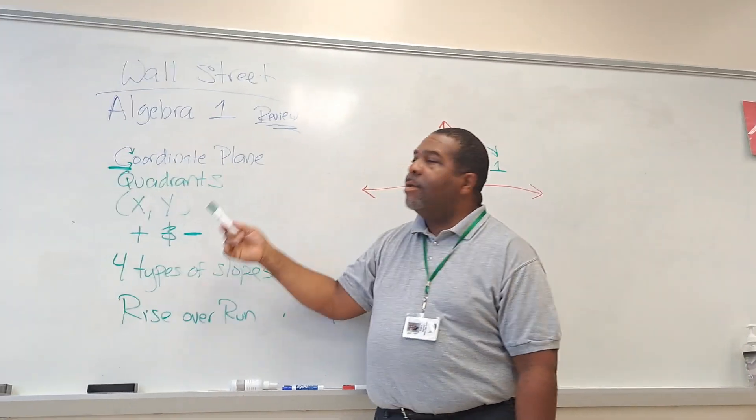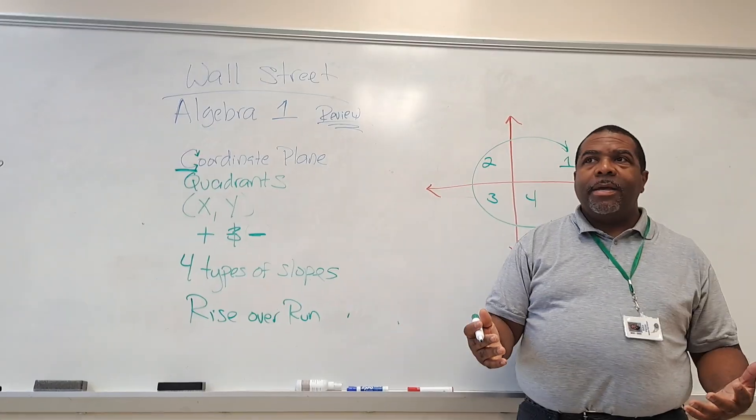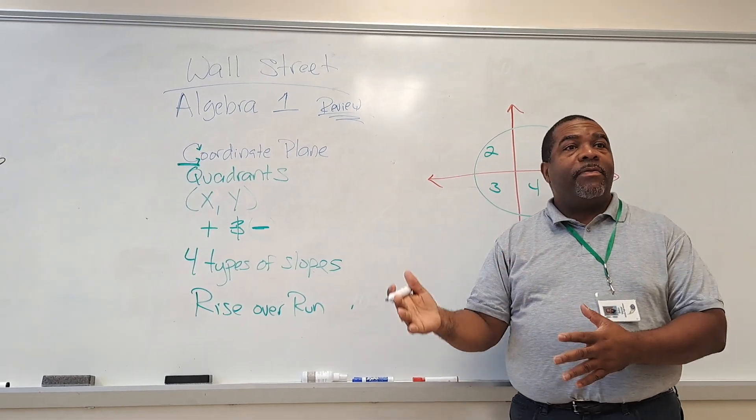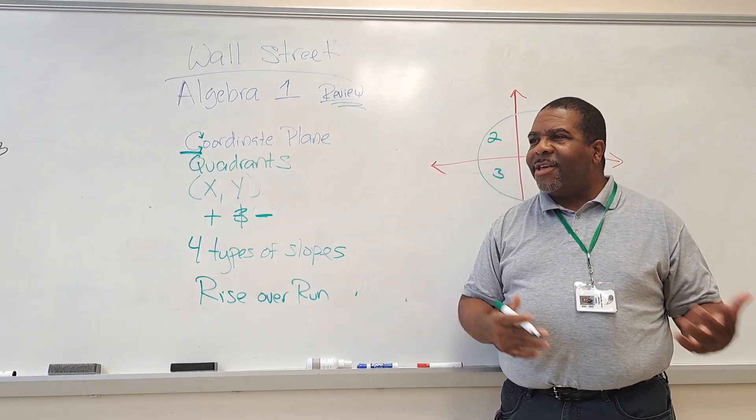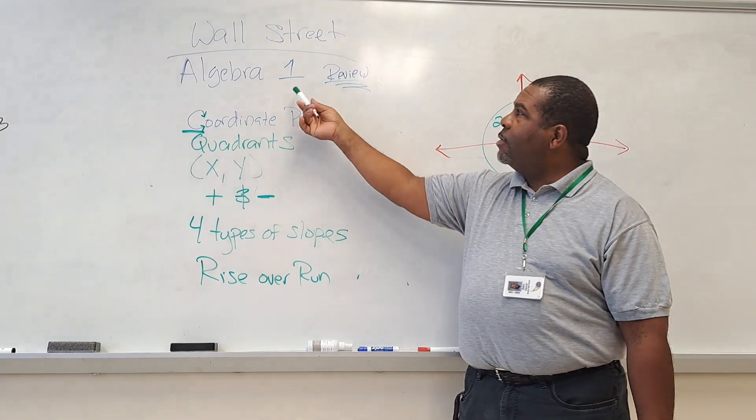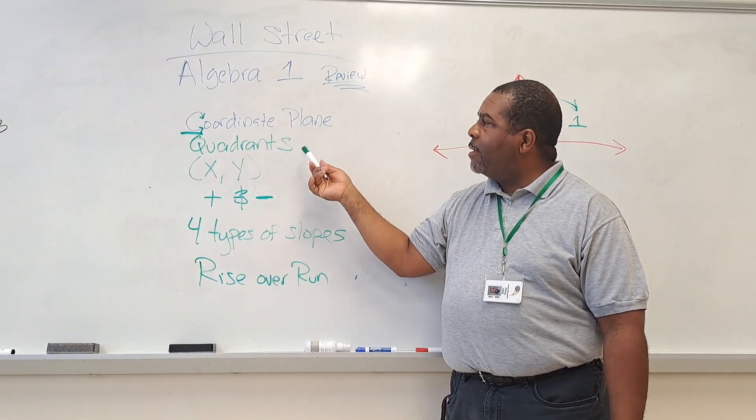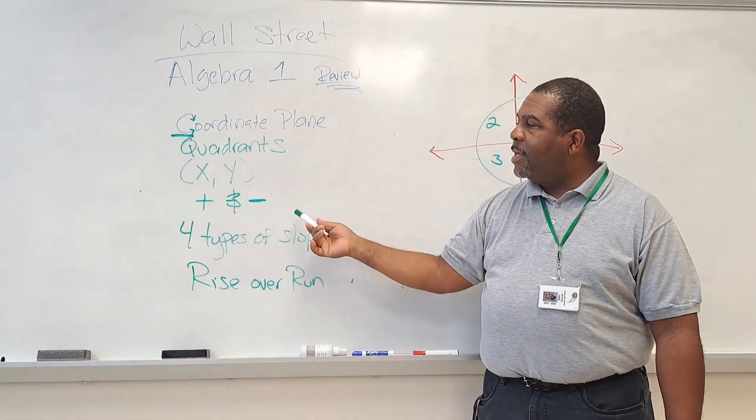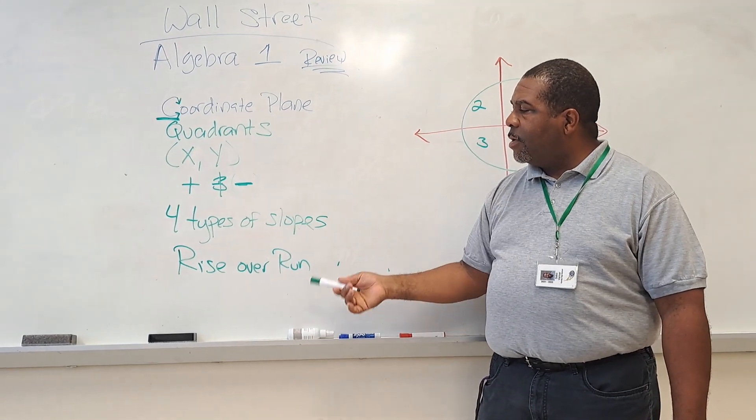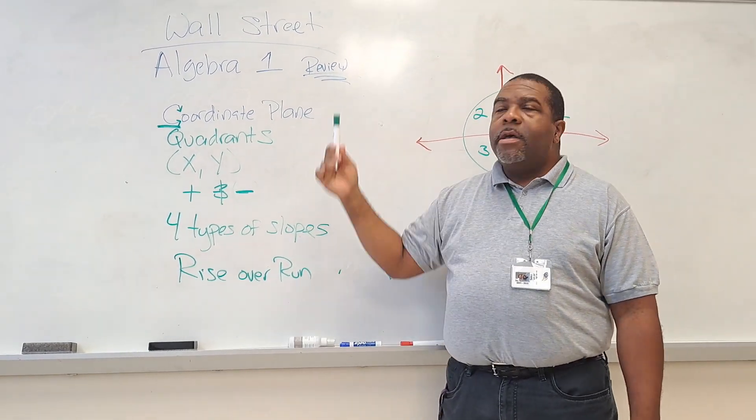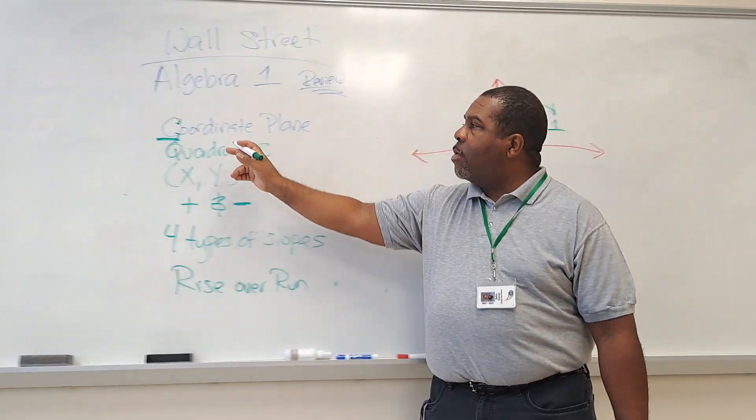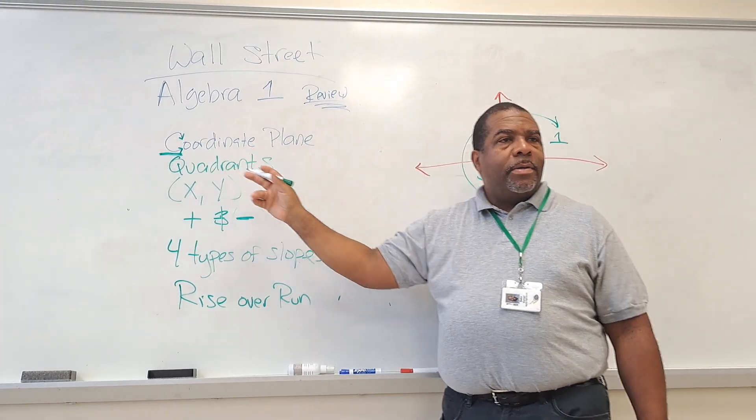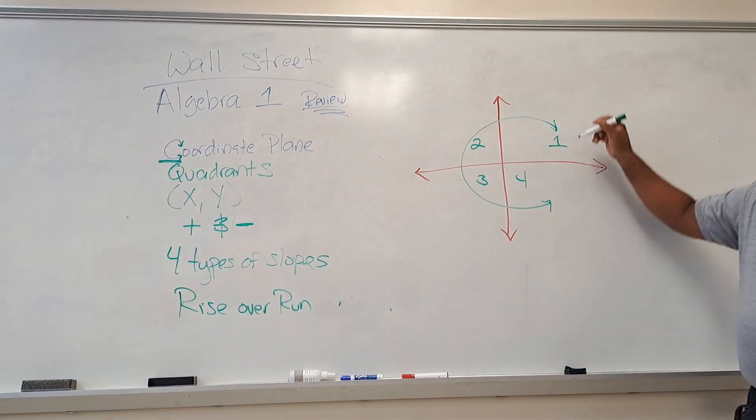All right, today on Wall Street, you know Wall Street, we're dealing with math and money. Actually, math, money, and motivation. Algebra one review, we're going to do coordinate planes, quadrants, X and Y, plus and minus, the four types of slopes, and rise over run. So, coordinate plane. The first letter in coordinate is C, and here's our C.